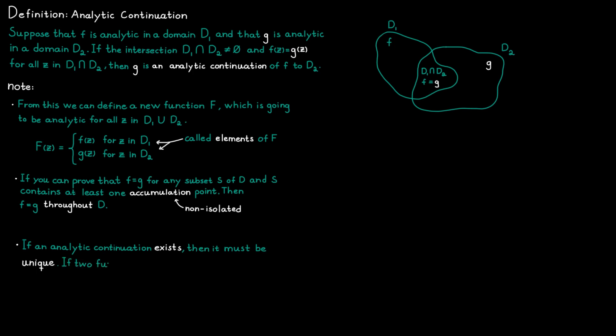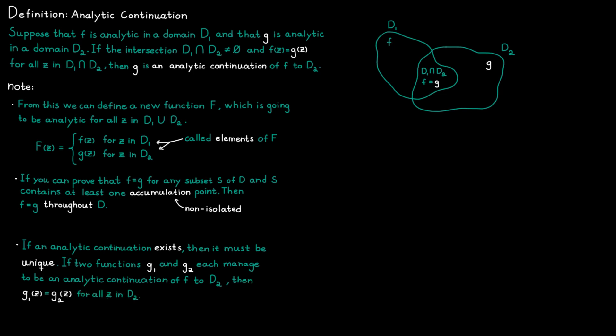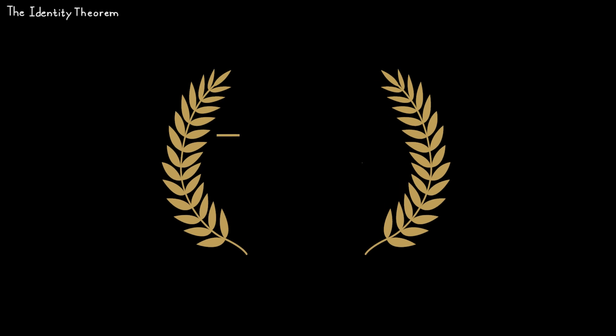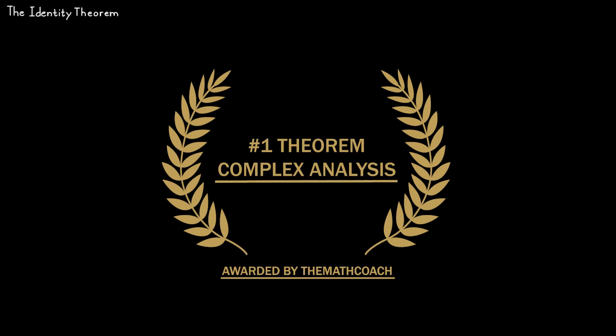If two functions G1 and G2 each manage to be analytic continuations of f to the domain D2, then those two functions are actually the same function. Both of these statements come from the identity theorem, which is the next topic. This theorem is by far the most important and powerful theorem about analytic functions in the whole course, because it tells us so much about how analytic functions behave on a domain.